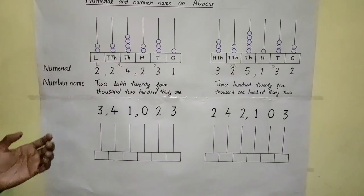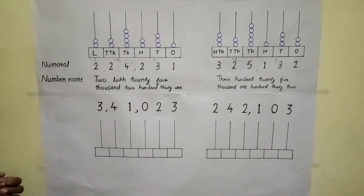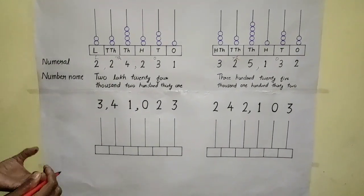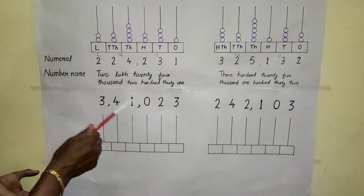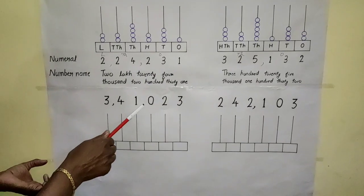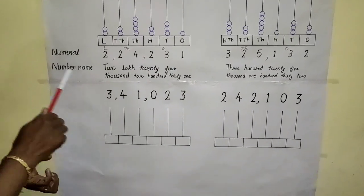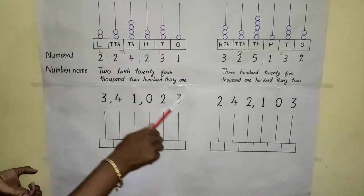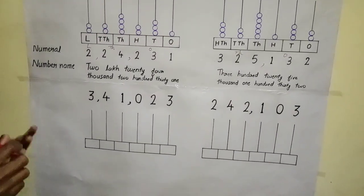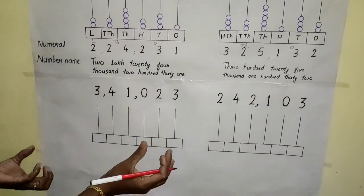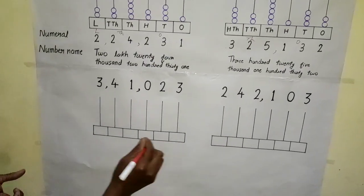You can see the number three, forty-one, zero, two, three — that is 3,41,023. We have to represent this number on this Abacus. First, you listen to the commas. The first period has three digits, then one comma. The next two digits, then one comma. It is very clear — this is the ancient numeration system. So at first, we have to draw the Abacus, then write the places according to the ancient numbering system.